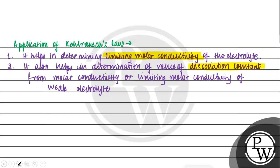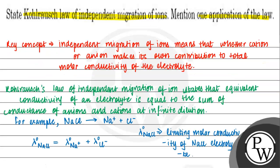And what is Kohlrausch's law? Let me highlight it. Kohlrausch's law of independent migration of ions states that the equivalent conductivity of an electrolyte is equal to the sum of the conductance of anions and cations at infinite dilution. I hope you understood the question well. Best of luck.